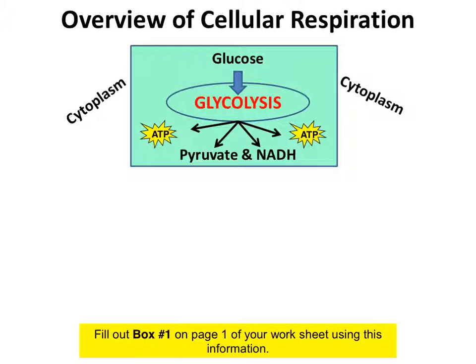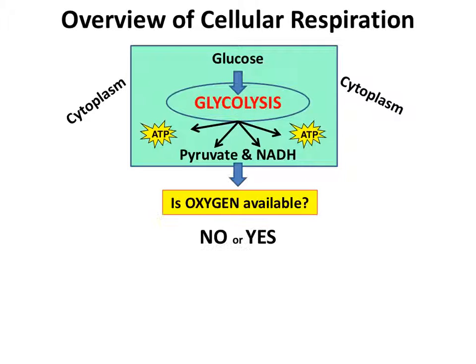If you look at your worksheet and find box number one at the top, you can fill in the same information from the video onto your worksheet. Now that glycolysis is complete, it's time to ask the critical question: is oxygen available? If the answer is yes, then these products will continue on to the aerobic pathway. But if the answer is no, they'll continue on the anaerobic pathway, or fermentation pathway.